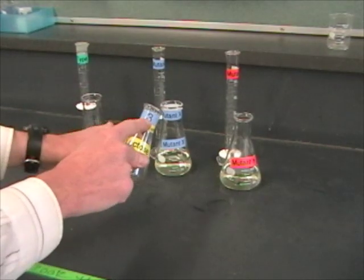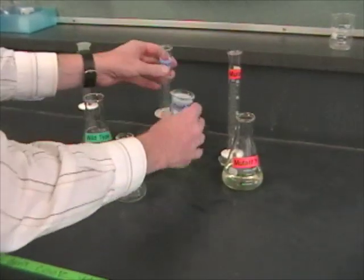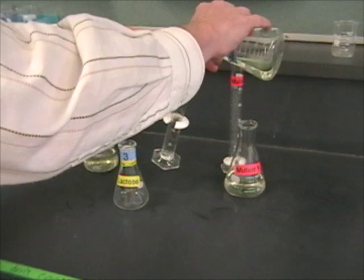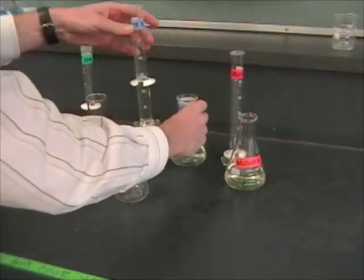Now, I have sample number three for my table, and that means that I'm going to need mutant X. And so I'm going to measure out 27 milliliters of mutant X, and then take this back to my table.